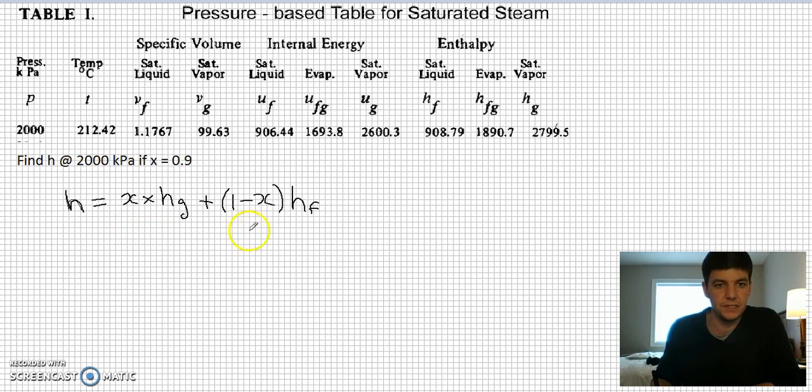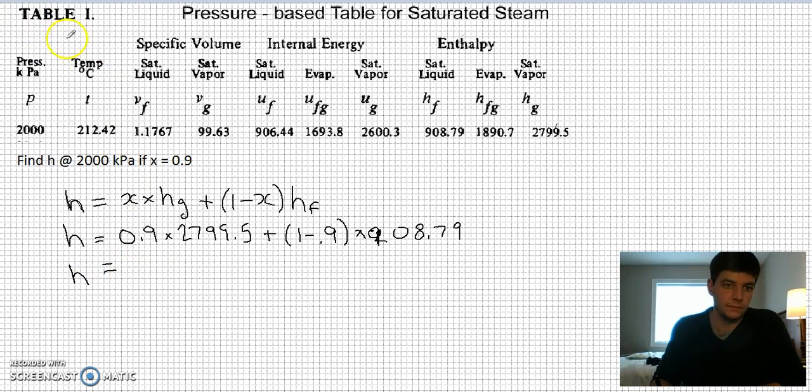If I put out my value, H is equal to 0.9 times my HG, 2799.5, plus (1 minus 0.9) times 908.79, and what I get is 2610.4, and again units of enthalpy here are kilojoules per kilogram.